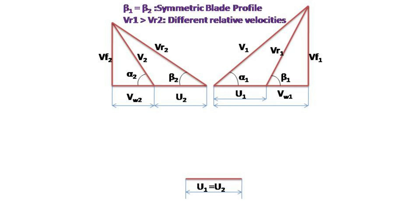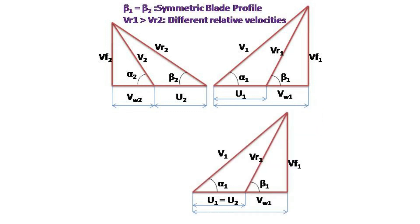Combining half velocity triangles starts with a common base line u which is blade velocity common for both velocity triangles. On this line we can place inlet velocity triangle on the right side and the outlet velocity triangle on the left side.